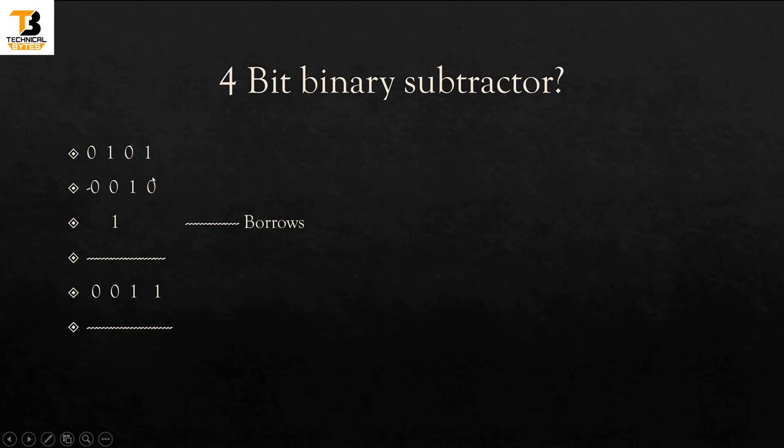It will subtract the LSB bit. 1 minus 0 is 1, we all know. 0 minus 1, so this is the negative number. So borrow will be generated here and it will become 2. When borrow is given to this, 2 minus 1 is 1. Now at this place we will put borrow here which will be subtracted from this subtraction. So 1 minus 0 is 1, and 1 minus 1 is 0, and 0 minus 0 is 0. So 3 is the answer.